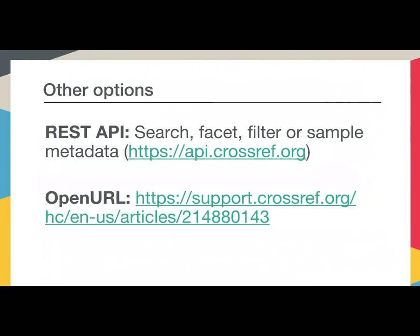The REST API is very useful for bulk downloading of data or filtering on specific information, like records with funding data, and it's a good option for any special projects you may have. We also have an OpenURL method of querying. It's a service used primarily by libraries, but you can use it to match basic metadata to DOIs. It's not as effective as our other APIs, but it's pretty simple to use, and if you're already familiar with that technology, it'll do the job for you.